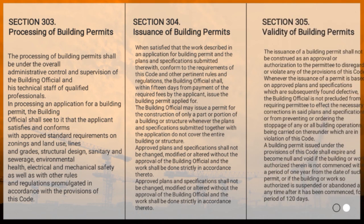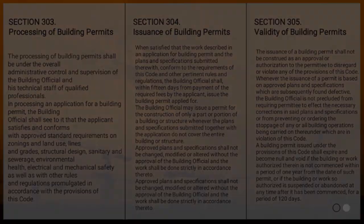The building official may issue a permit for the construction of only a part or portion of a building whenever the plans and specifications submitted do not cover the entire building or structure. Approved plans and specifications shall not be changed, modified, or altered without the approval of the building official, and the work shall be done strictly in accordance thereto. Section 305, Validity of Building Permits: the issuance of a building permit shall not be construed as an approval or authorization to the permittee to disregard or violate any provisions of this Code. A building permit shall expire and become null and void if the building or work authorized therein is not commenced within a period of one year from the date of such permit, or if the building or work is suspended or abandoned for a period of 120 days.